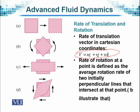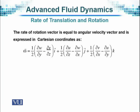The rate of rotation at a point is defined as the average rate of rotation of two initially perpendicular lines that intersect at that point, as shown in picture B. The rate of rotation vector equals the angular velocity vector omega, expressed in coordinates. Its x-component is equal to one-half times the quantity: the partial derivative of W with respect to Y, minus the partial derivative of V with respect to Z. Similarly, there are two other components of this rotation vector, commonly denoted by omega.